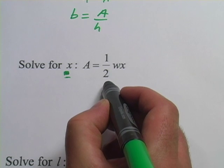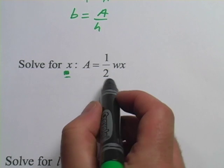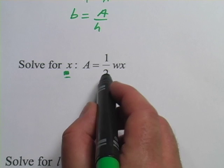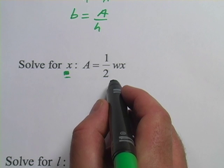X is being multiplied by 1 half and it's being multiplied by W. I think I'm going to take that in two steps. I want to get rid of this 1 half over here first. Now if I were going to get rid of something that's multiplied by X, I would divide by that. So I would divide this by 1 half.